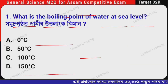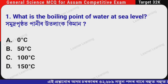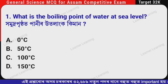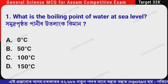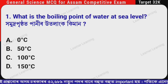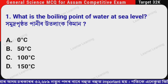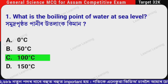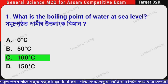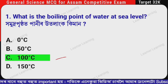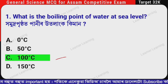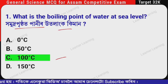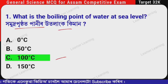First question: What is the boiling point of water at sea level? (Assamese: Homudra pishthat panir utalangko ki maan?) The correct option is Option C — 100 degree Celsius. The boiling point of water at sea level is 100 degree Celsius. Remember this.